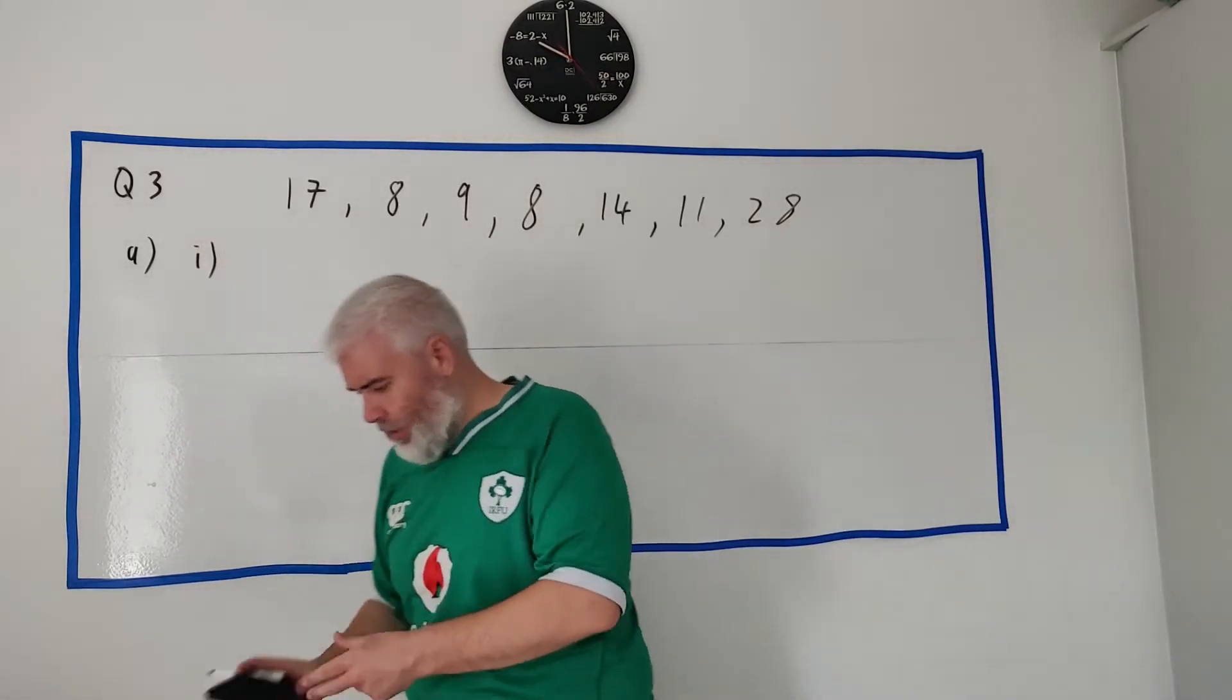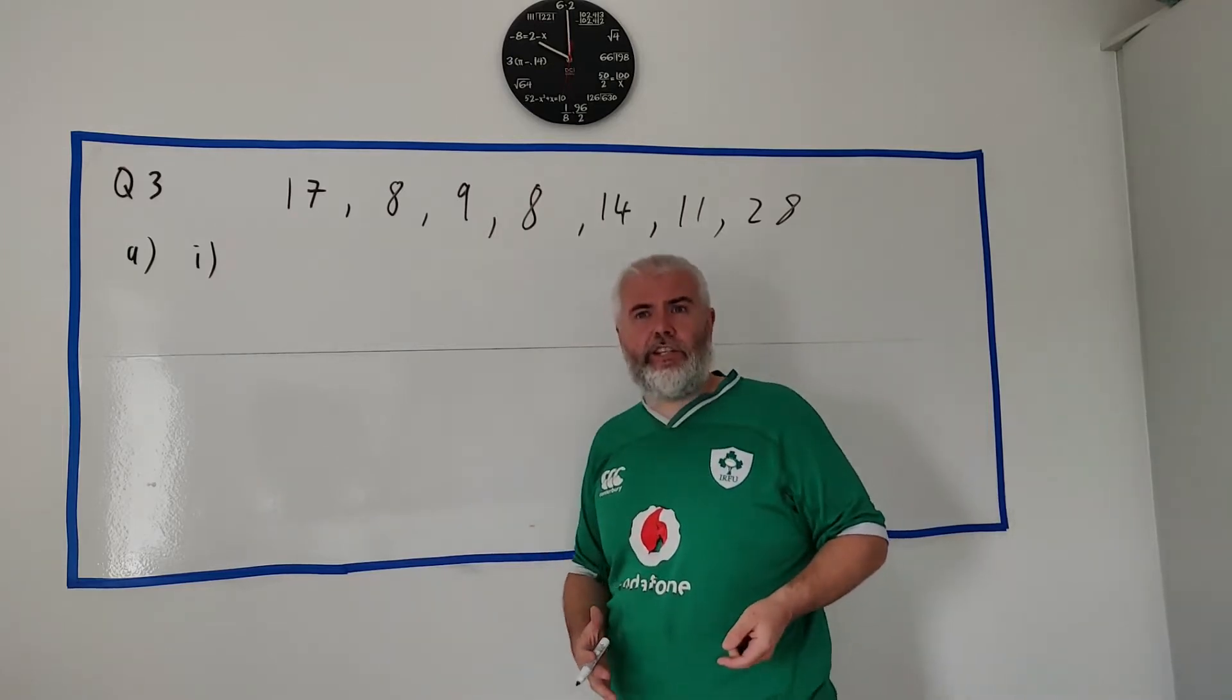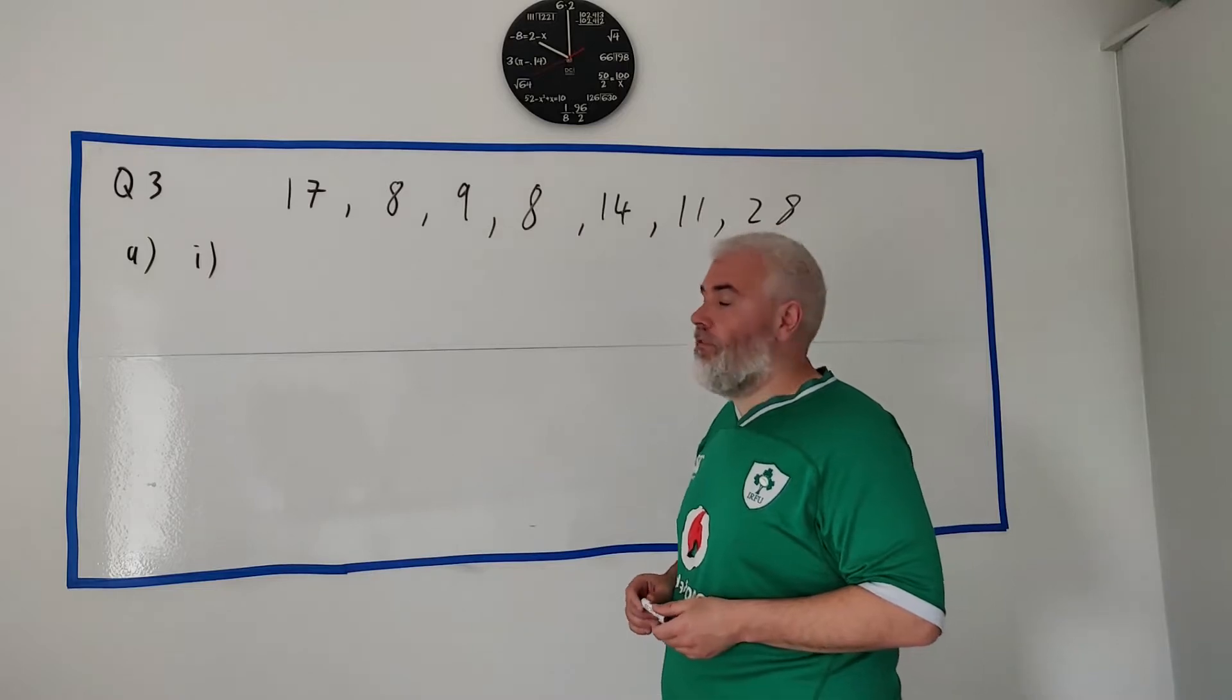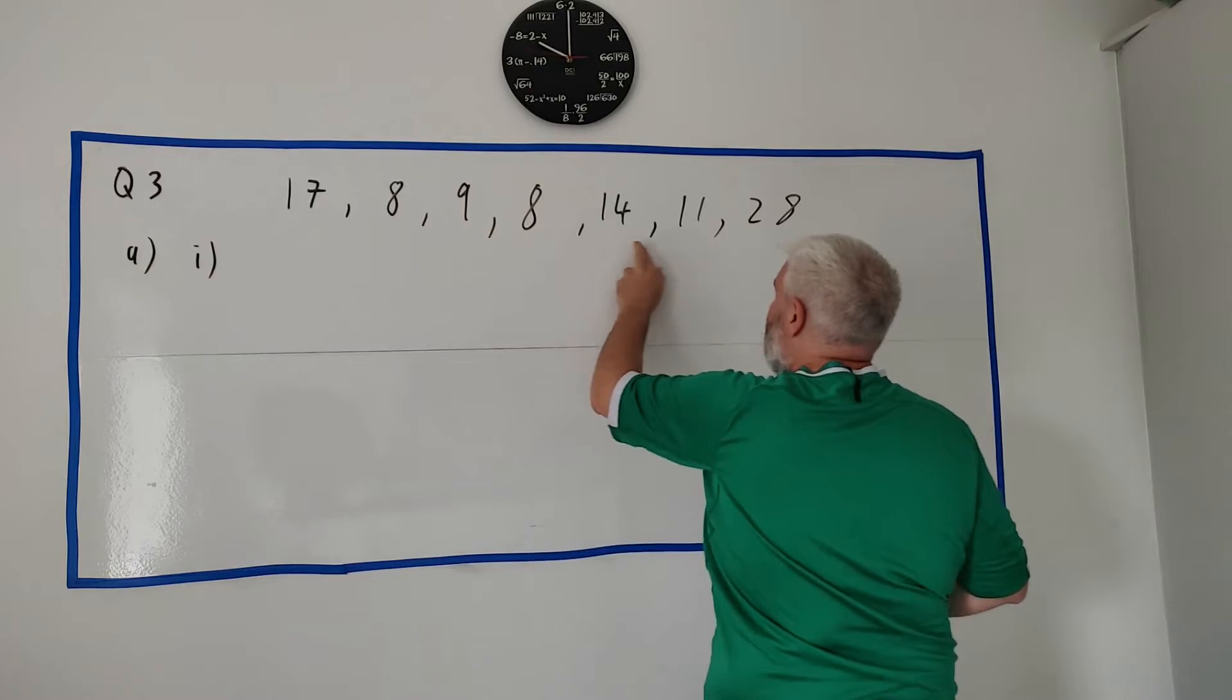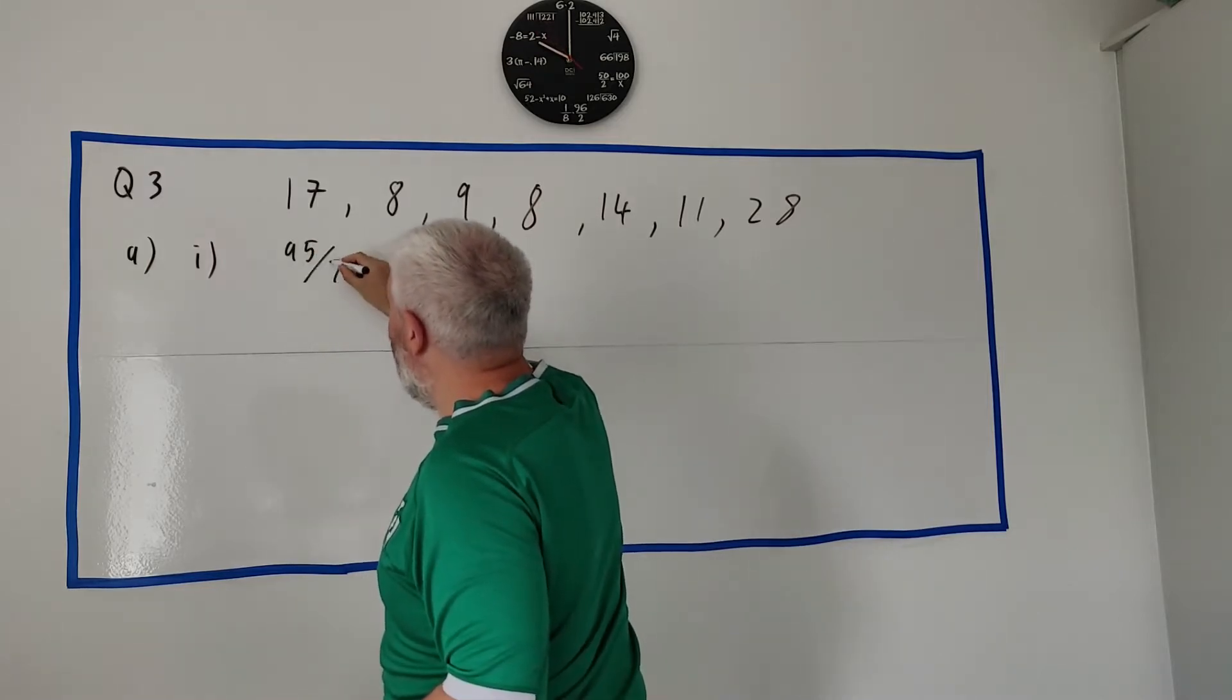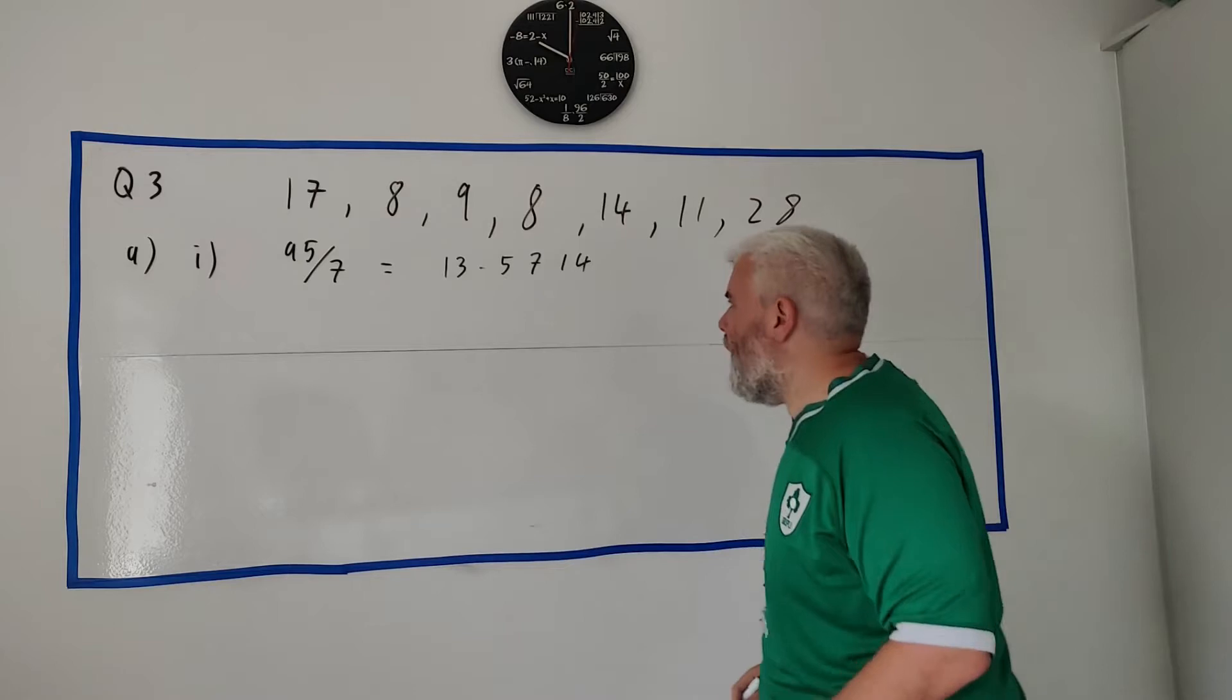Now what you could do is use a calculator and go to the statistics part of your calculator, put these numbers in. You can do it by hand - add all these numbers up, divide it by seven. If you add them all up you would get 95, divide it by seven.